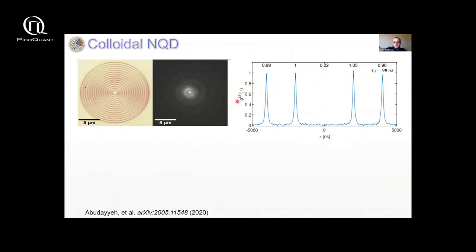We confirmed that it's a single quantum dot by doing G2 measurements using a Hanbury-Brown-Twiss experiment. And this lack of a peak at the center indicates that you have very high single photon purity.